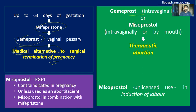Gemeprost, a prostaglandin, can be given through the intravaginal route, or it can be replaced with misoprostol given either intravaginally or orally for therapeutic abortion. Misoprostol is a prostaglandin E1 analog and is contraindicated during pregnancy unless used as an abortifacient, in which case it is combined with mifepristone. Its use for induction of labor is unlicensed.